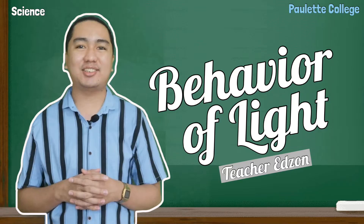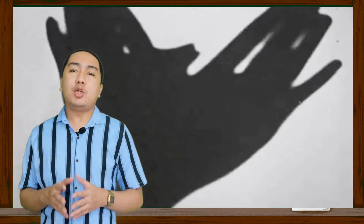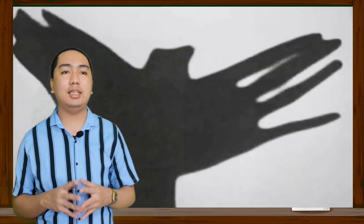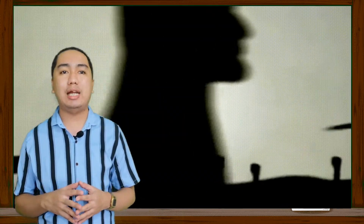For today's lesson, I'll be discussing the behavior of light. You may have experienced creating shapes of objects by projecting shadows with your hands on a wall, usually with a lighted candle as your light source. A shadow is formed when you block the path of light. Light does not bend around corners, so whenever an object blocks some of the light, a shadow is created. This shows that light travels in a straight path.